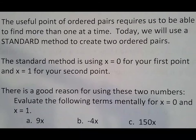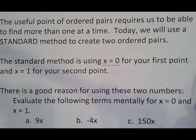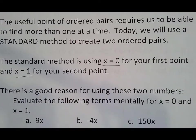So the useful point of ordered pairs requires us to be able to find more than one at a time. Today we're going to use a standard method to create two ordered pairs. What do I mean by standard method? It means use x equals 0 for your first point, and x equals 1 for your second point.